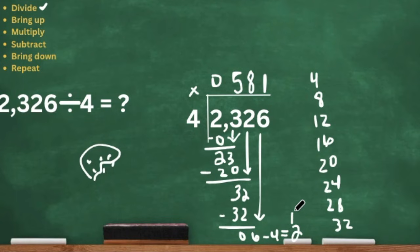So 6 minus 4 is 2 — that is our remainder, that is what we have left over. So our answer is 581 with a remainder of 2.